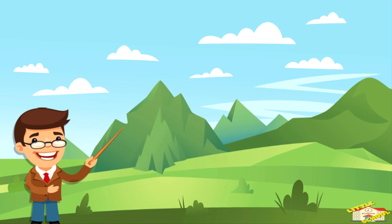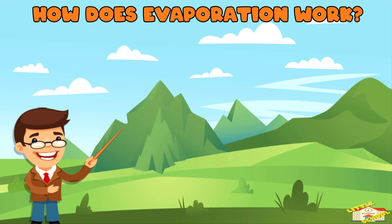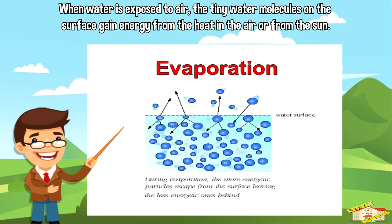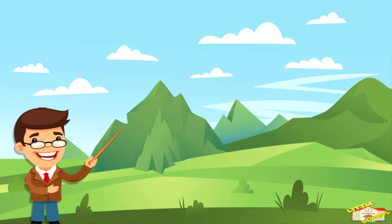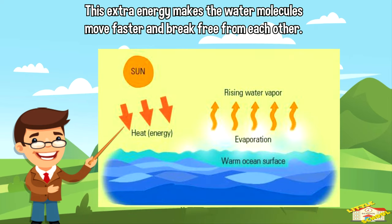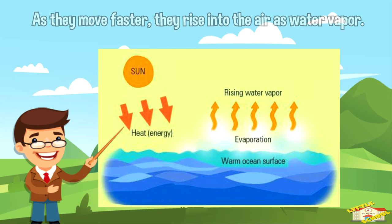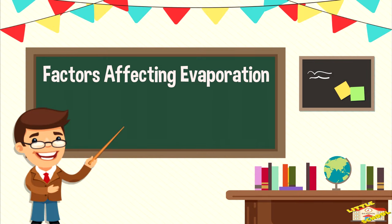So how does evaporation work? When water is exposed to air, the tiny water molecules on the surface gain energy from the heat in the air or from the sun. This extra energy makes the water molecules move faster and break free from each other. As they move faster, they rise into the air as water vapor.